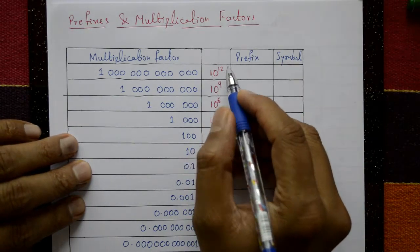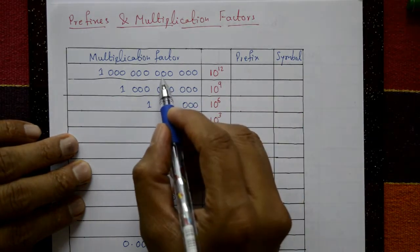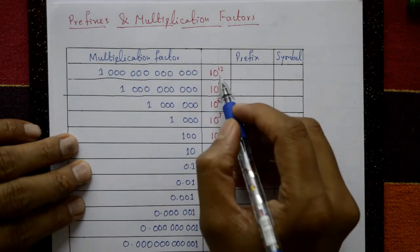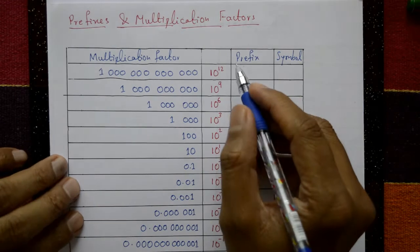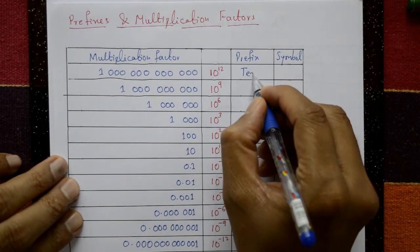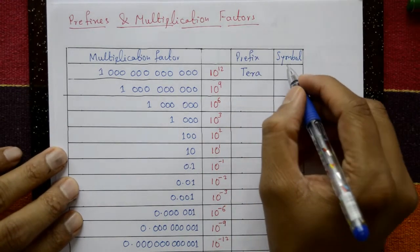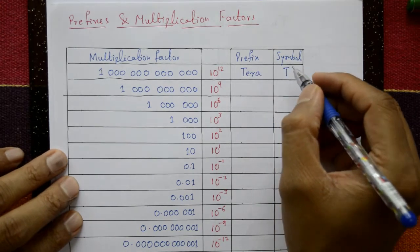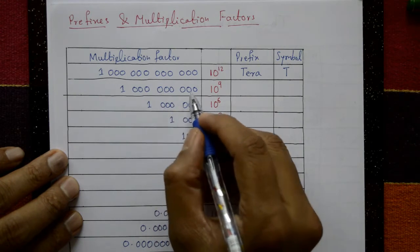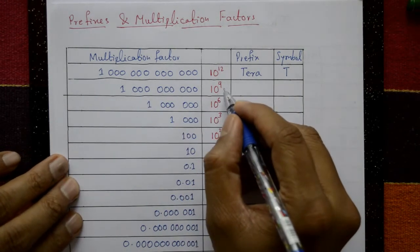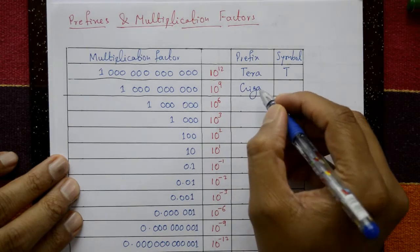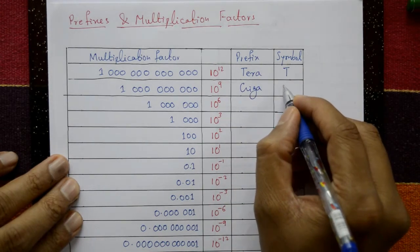10 to the power 12 — triple zero, triple zero, triple zero, three, six, nine, twelve zeros — the prefix is tera and the symbol is T. 10 to the power 9 — nine zeros — 10 to the 9 is giga, and the giga symbol is G.